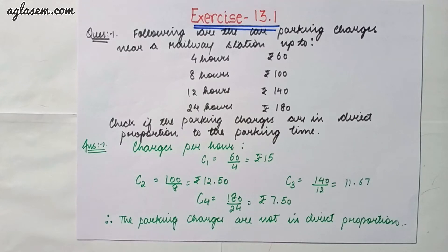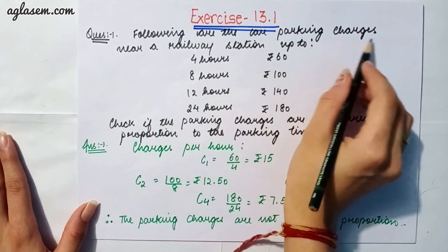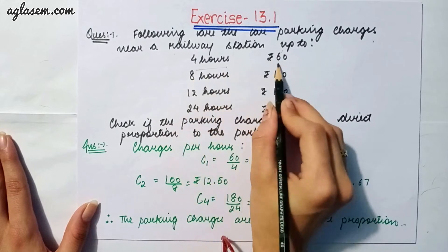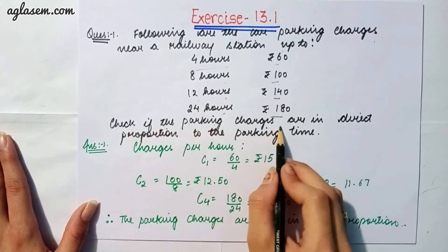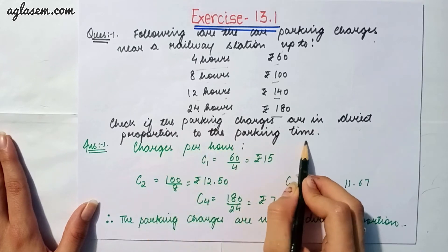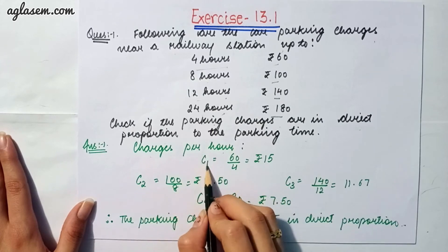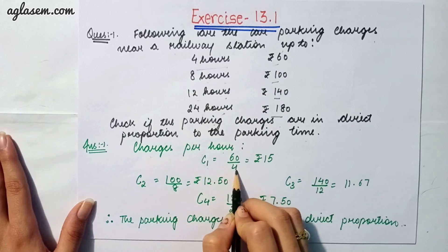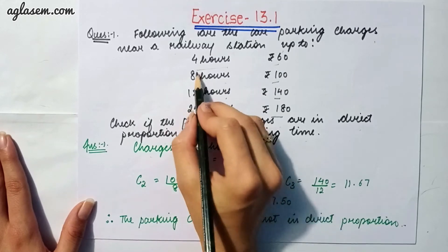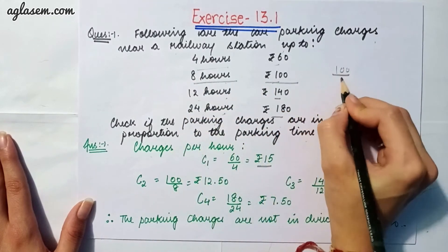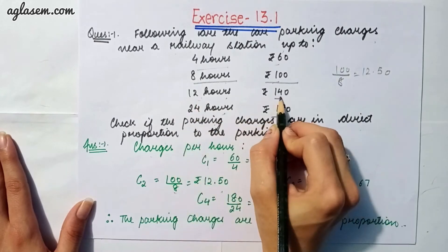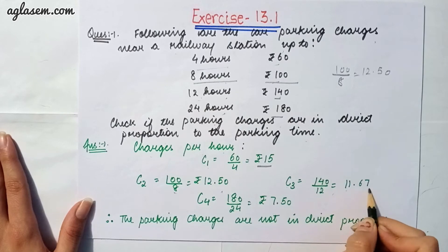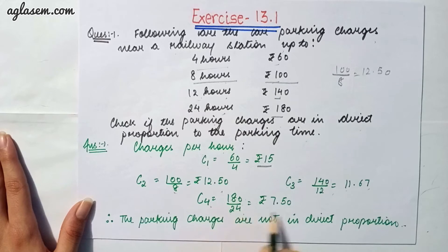Starting with the first exercise, that is 13.1. Question 1 says: following are the car parking charges near the railway station — 4 hours: 60 rupees, 8 hours: 100 rupees, 12 hours: 140 rupees, and 24 hours: 180 rupees. We have to check if the parking charges are in direct proportion to the parking time. Finding charges per hour: 60÷4 = 15 rupees, 100÷8 = 12.50 rupees, 140÷12 = 11.67 rupees, 180÷24 = 7.50 rupees. Therefore, the parking charges are not in proportion.